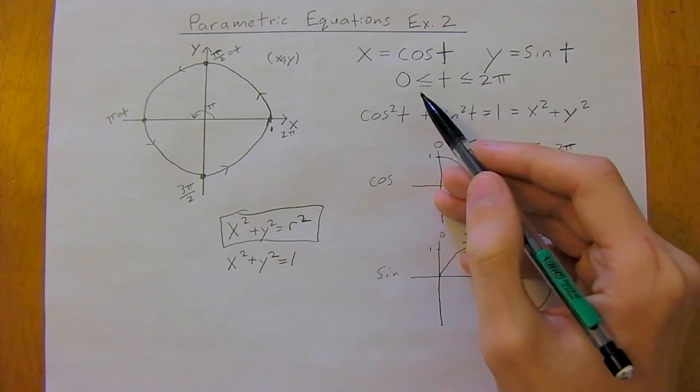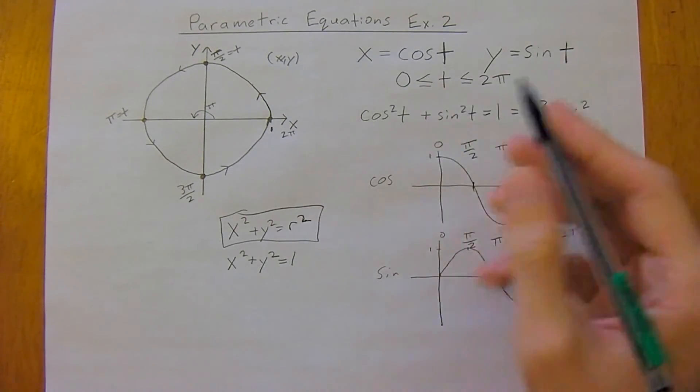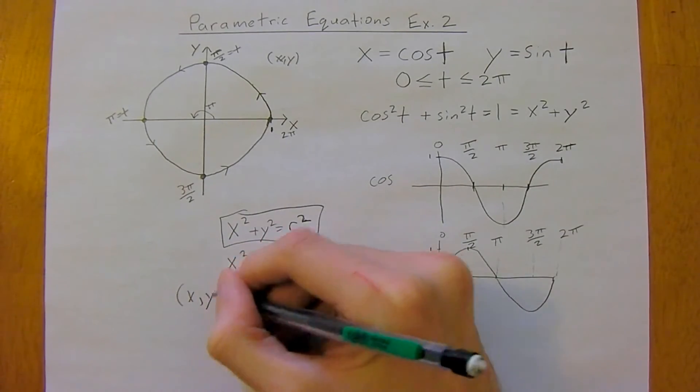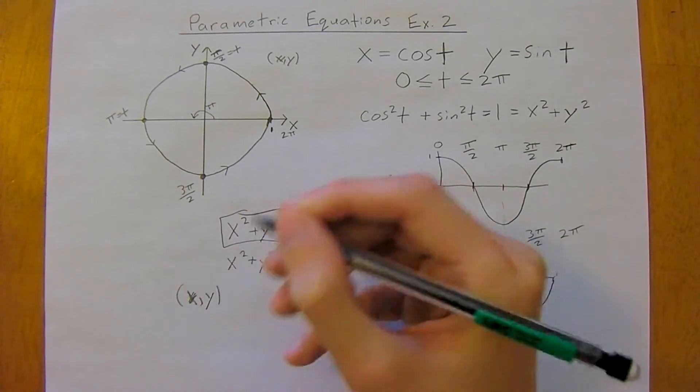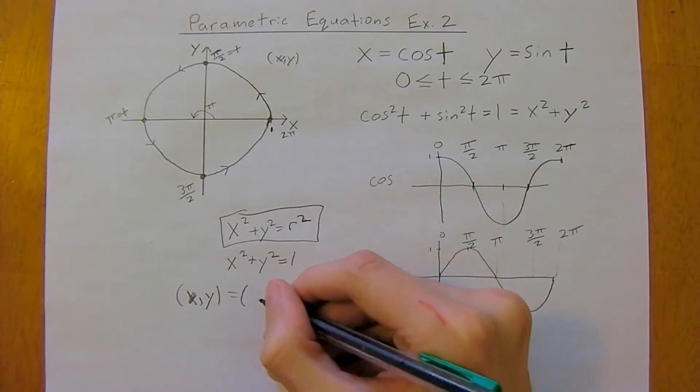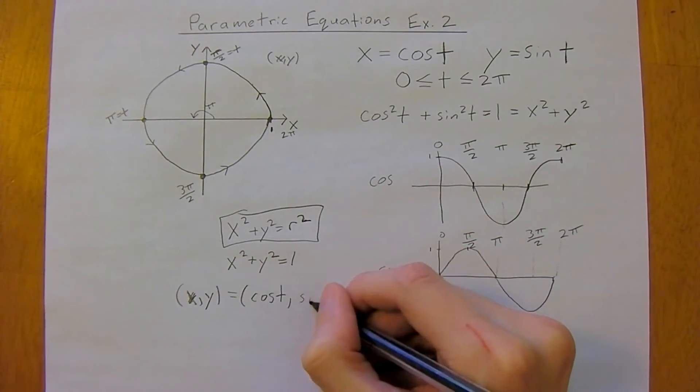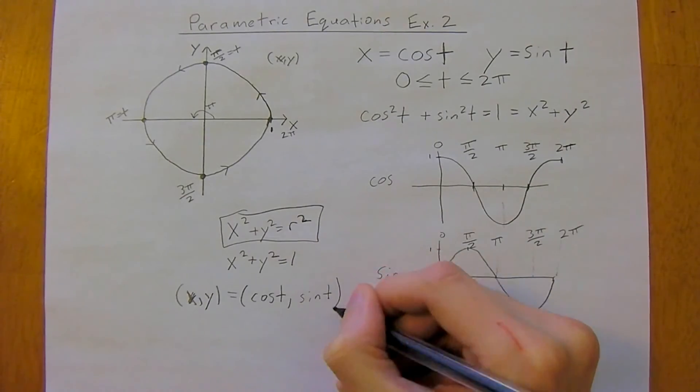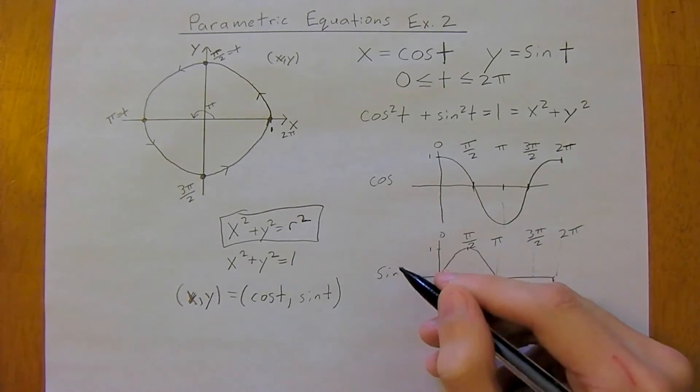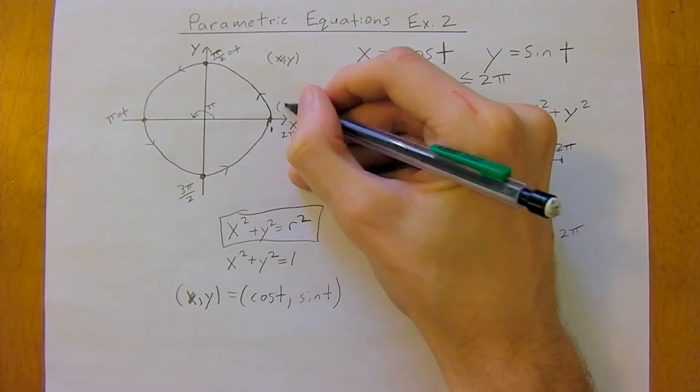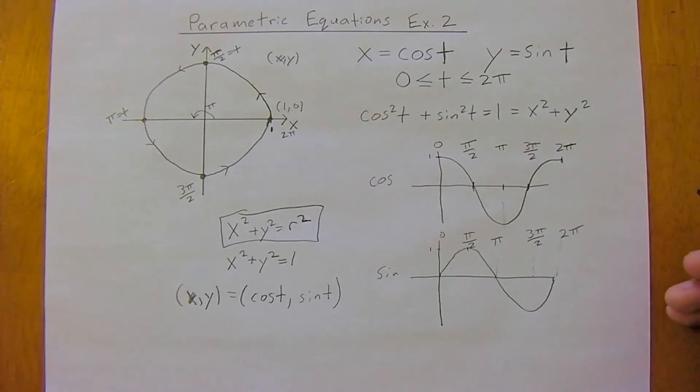And as t increases from 0 to 2 pi, the points x, y, so x, y, is equal to function cosine t and sine t. And this moves once around the circle in the counter-clockwise direction, starting at the point 1, 0.